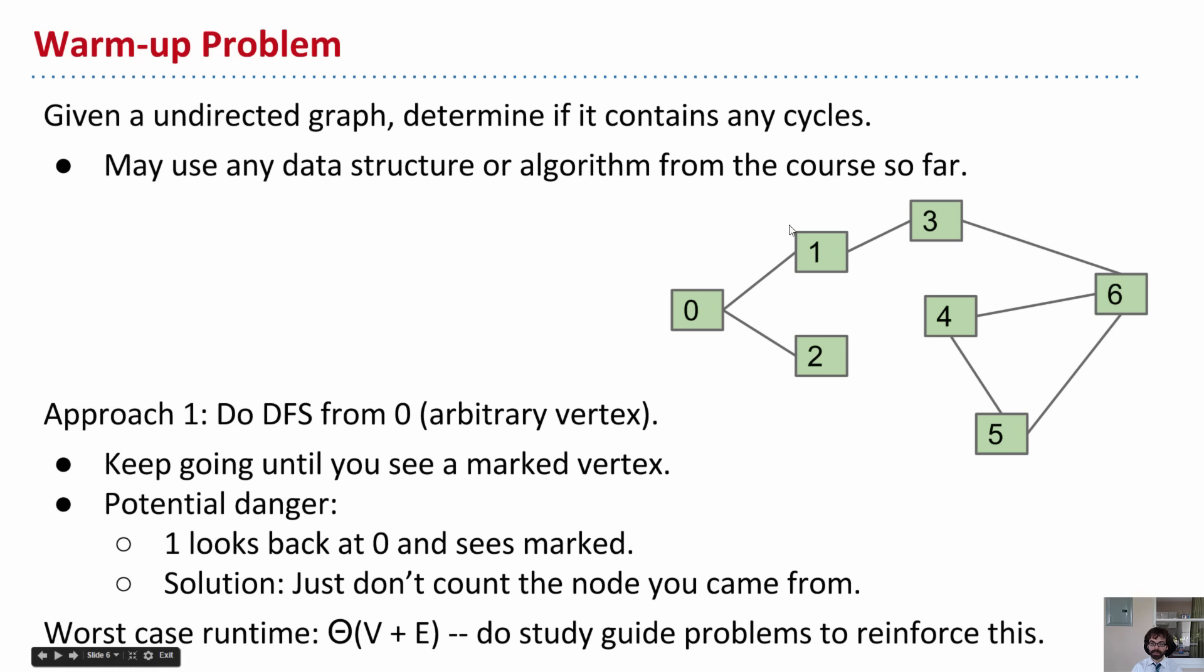So in that case, this is not a cycle in an undirected graph. And so we'll make a special note that we'll ignore the place we just came from. So we'll have to modify the DFS call. Maybe we'll add an extra parameter that says where you came from. And we'll ignore checking that one for marked, because there's no need to, and that's not a cycle.